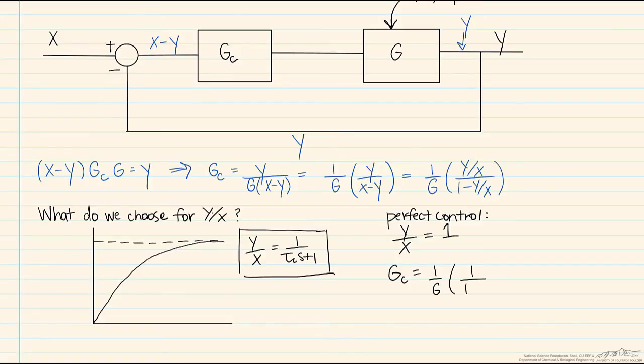But what we note here is if we substitute that into the equation for the controller transfer function, what that leads to is Gc equals (1/G) times (1/(1-1)). And that causes a problem because that would mean that Gc would equal infinity. This can't happen. So therefore, this further proves the concept that feedback control cannot be perfect control, cannot be instantaneous control.